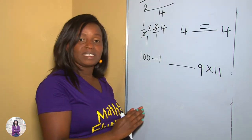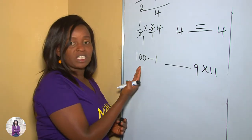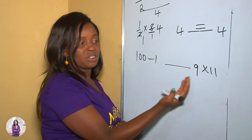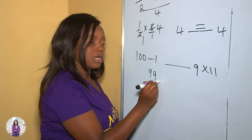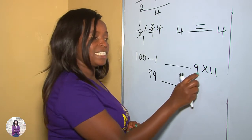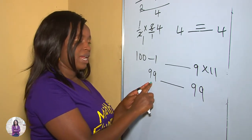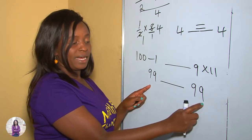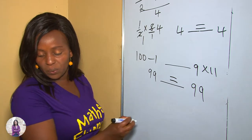So the first step, we solve before comparing. We solve whatever is on the left and whatever is on the right. A hundred take away one is 99, 9 times 11 is 99. As you can see, on the left is equal to the right, so we put the equal sign. What about this kind of question?